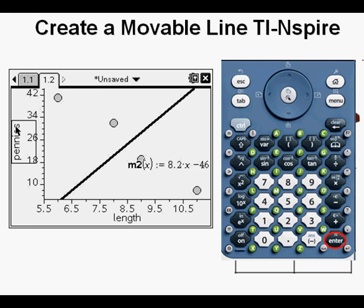We see a line with the equation M2 equals 8.2x minus 46.